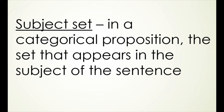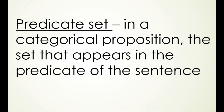In a categorical proposition, the subject set is the set that appears in the subject of the sentence. The subject of a sentence is what the sentence is about, and the subject of that categorical proposition defines a set called the subject set. Similarly, the predicate set is the set that appears in the predicate of the sentence — the predicate describes something happening to the subject, and that set is called the predicate set.